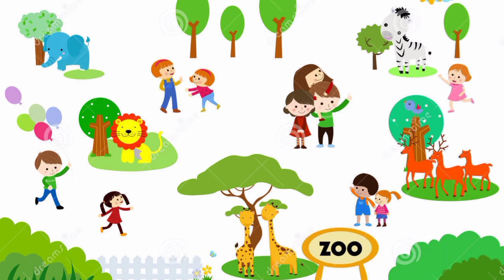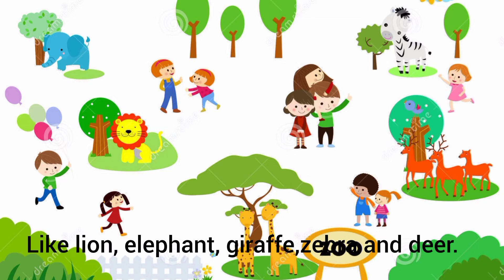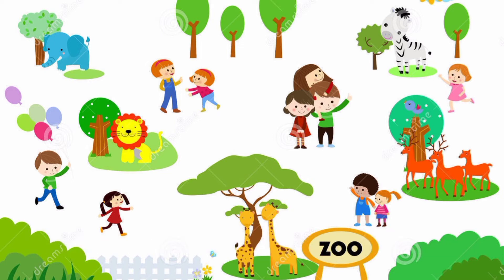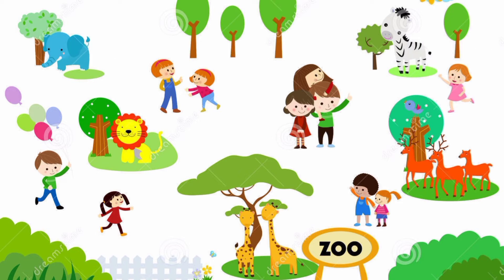Number three — we can say: 'There are many animals in this picture,' like lion, elephant, giraffe, zebra and deer. Our next sentence can be: 'There are two giraffes in this picture, and they are standing in front of a tree.'